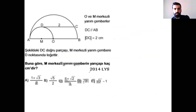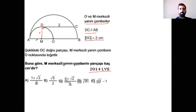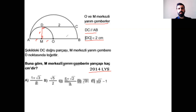Yine bir çıkmış sorumuz var, 2014 LGS sorusuymuş. O ve M merkezli yarım çemberler, DC ile AB paralel demiş. DC iki birim, şekilde DC'ye doğru parçası. M merkezli yarım çemberi D noktasına tete ettir. Tete varsa birleştirirsem dik olmak zorunda. M merkezli yarım çemberin yarı çapını istemiş. Buraya R diyelim, o zaman burasının R olduğunu söylüyorum; burası da R. Sonra burasının dik olduğu bilgisine sahibim.